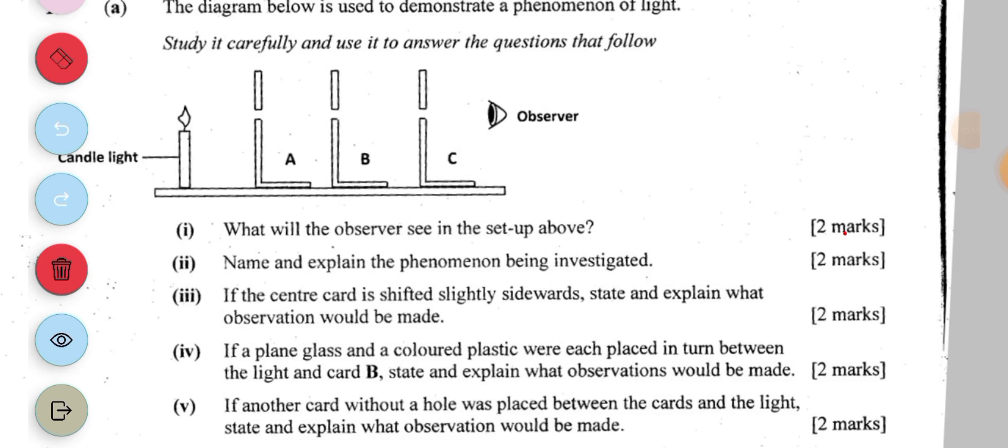The diagram below is used to demonstrate a phenomenon of light. Study it carefully and use it to answer the questions that follow. We have an observer here, then a candle light. We also have structures here with holes through which an observer cannot see the candle light.